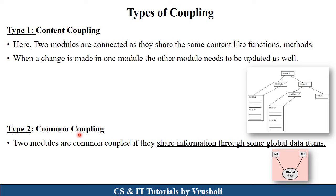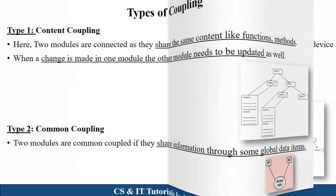The next type is common coupling. While generating a particular program, you declare global variables — for example, global integer a = 10. At that time, all the modules share the same global variable or global data item. This is called common coupling.